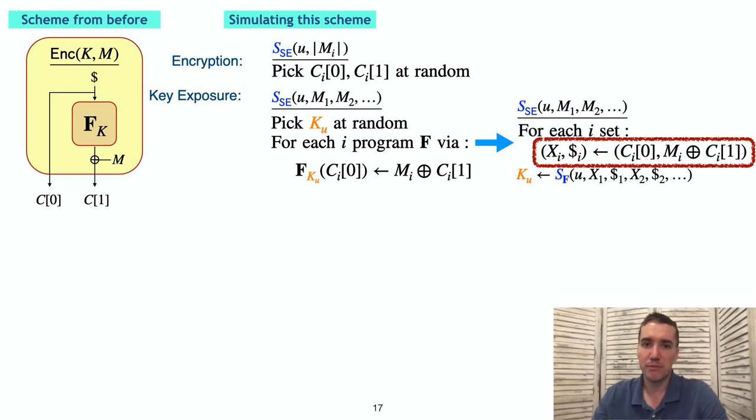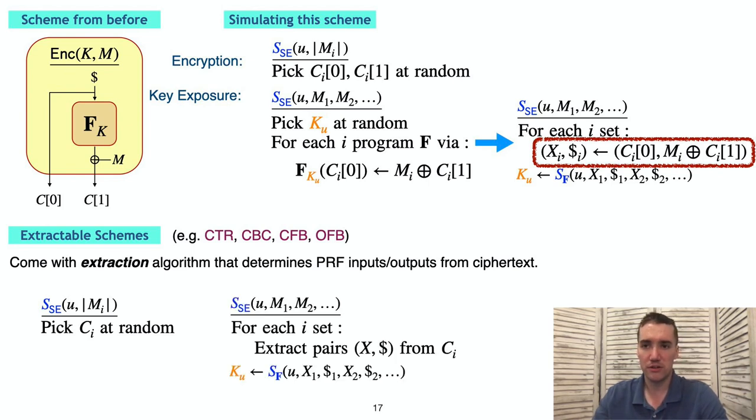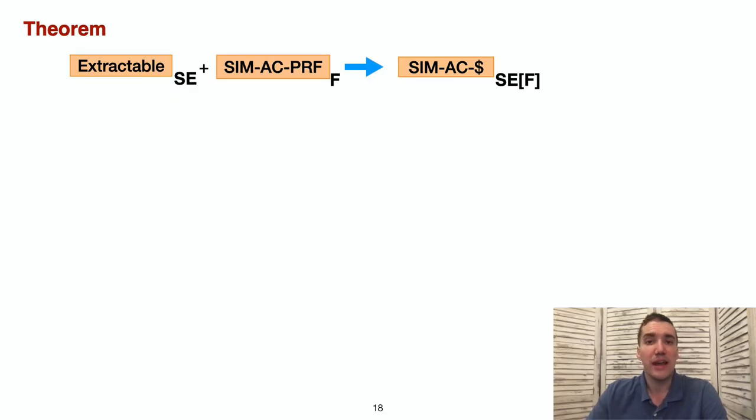We refer to this step of choosing input output pairs as extraction. For our general security result, we broadly introduced the notion of extractable encryption schemes. These are just schemes that come with a procedure for determining explanatory values of the PRF. For such a scheme, there's a canonical strategy that we can use for simulating. First, ciphertexts are just chosen at random. And then at exposure time, we use the extractor to obtain these explanatory values. We feed them to the simulator to the PRF to obtain the key that we're going to return. Our main CPA theorem says that any extractable mode of operation is secure when using a SimAC secure PRF.